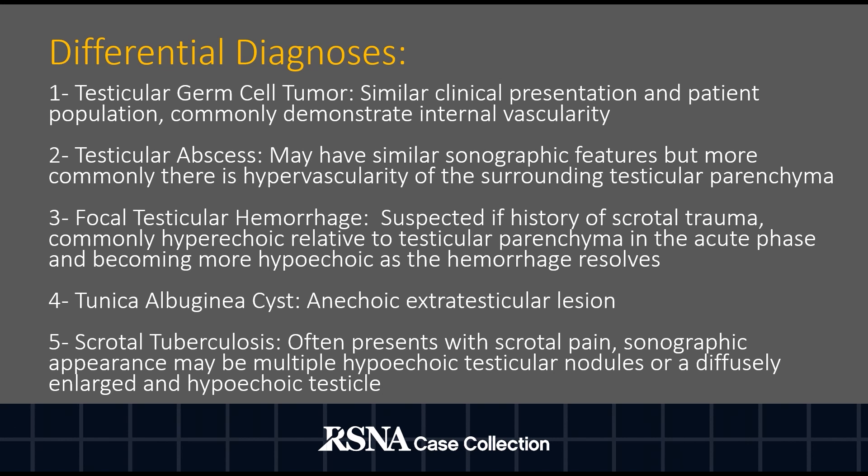Tunica albuginea cysts may present as a palpable scrotal mass if large enough, but would have the sonographic appearance of an anechoic extratesticular lesion. Scrotal tuberculosis is an uncommon infectious disease that often presents with scrotal pain rather than a palpable mass, and would have the appearance of either multiple hypoechoic testicular nodules or a diffusely enlarged and hypoechoic testicle on ultrasound evaluation.